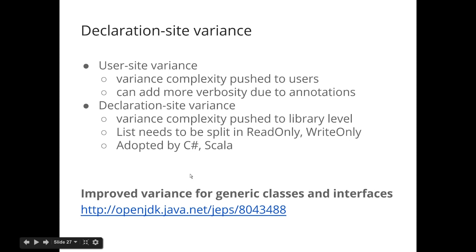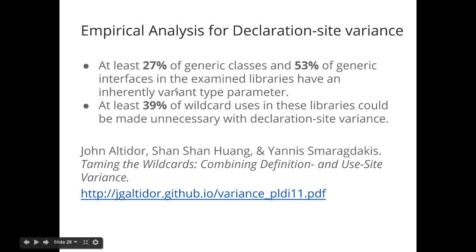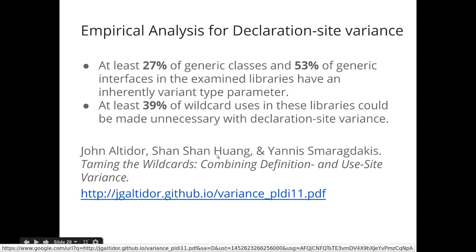Research shows declaration-site variance could be quite useful: at least 27% of generic classes and 53% of generic interfaces examined have only one inherent variance — used either covariantly or contravariantly but not both — meaning they could benefit from declaration-site variance annotations.